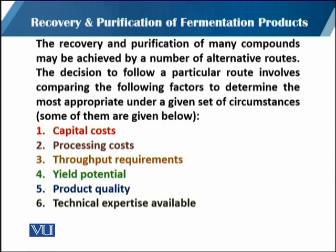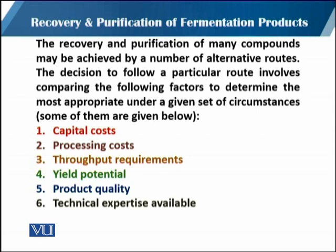The recovery and purification of many compounds may be achieved by a number of alternative routes. The decision to follow a particular route involves different circumstances. The main factors to focus on are: capital cost, processing cost, throughput requirement, yield potential, product quality, and technical expertise available. These are the six key factors to consider while choosing the recovery and purification route.